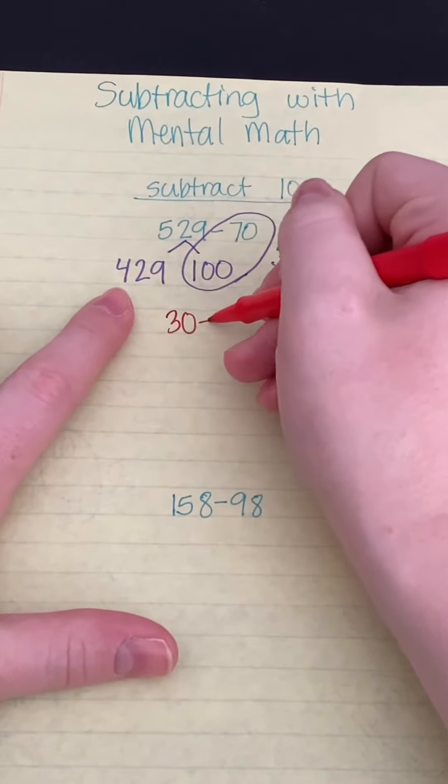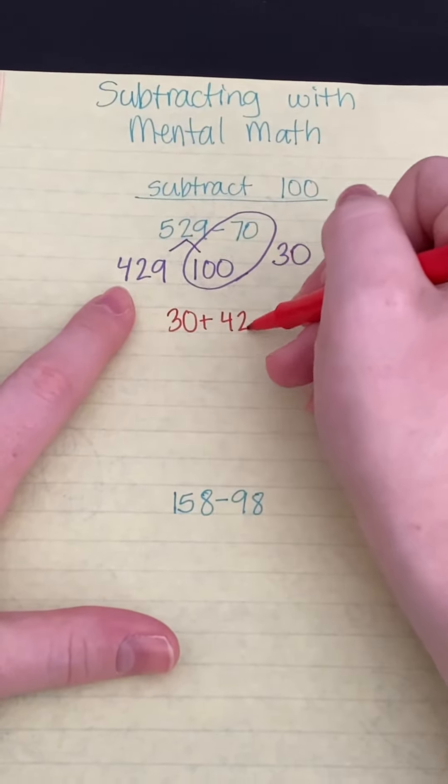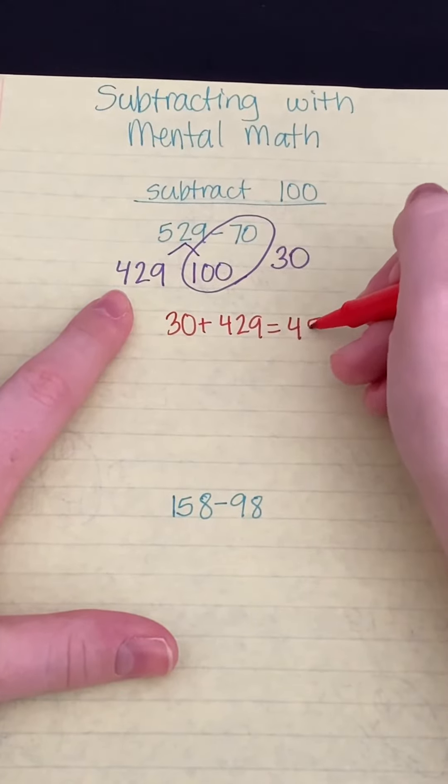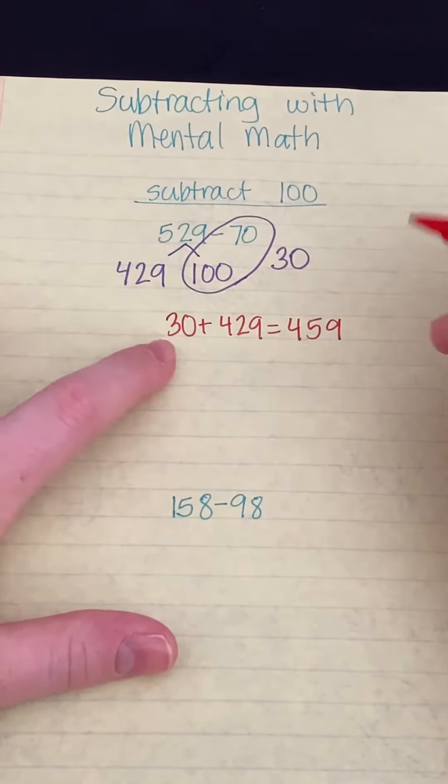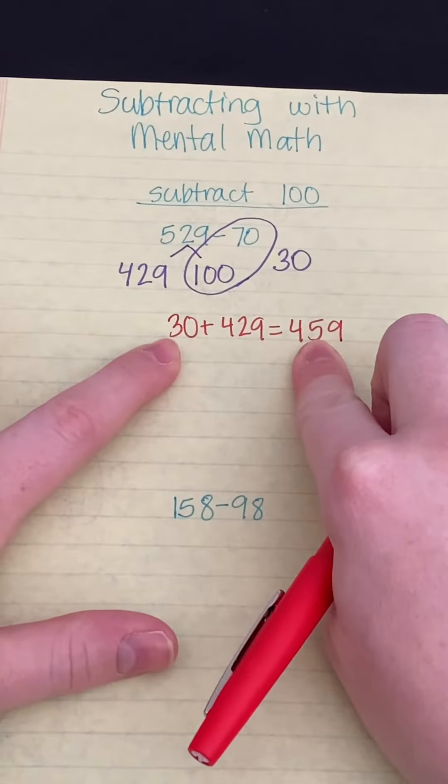together with addition by adding 30 to 429, and that is 459 since 3 tens and 2 tens make up 5 tens.